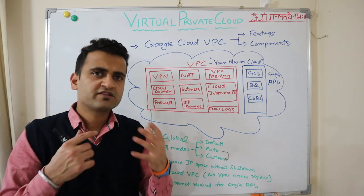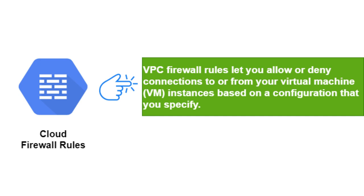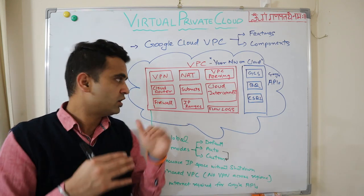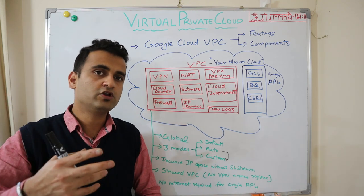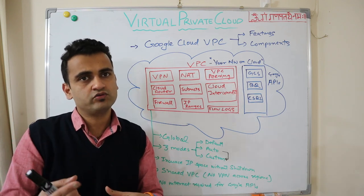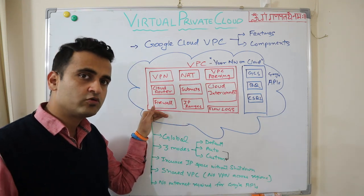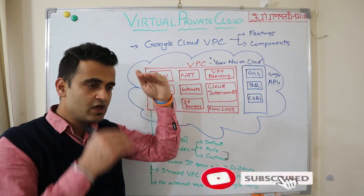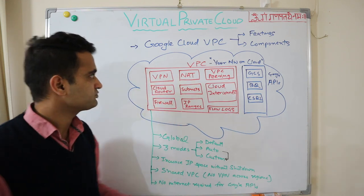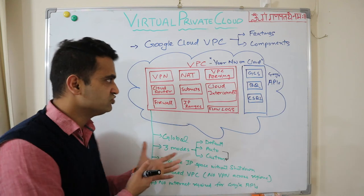You can also have static routing where you define your own network. Firewall is controlled under VPC, but you will define actual firewall rules on your VMs. You can enable or disable firewall rules in your overall VPC. By default you have one ingress rule and one egress rule — ingress means incoming and egress means outgoing. You can define firewall rules at the VPC level, but at the VM level you will have your specific firewall rules established.